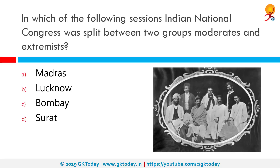In which of the following sessions did the Indian National Congress split between two groups, moderates and extremists? The correct answer is Surat. The Surat Split of 1907 is quite famous. At the Surat session, Congress leaders split into two groups — moderates and extremists. The rift between these two sections became apparent at the Banaras session of 1905 when some nationalists led by Tilak denounced the methods of the moderates and suggested passive resistance.